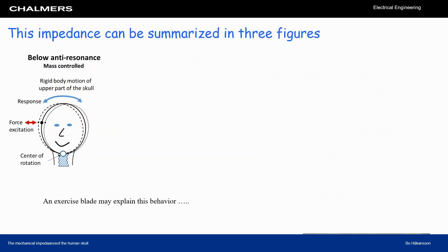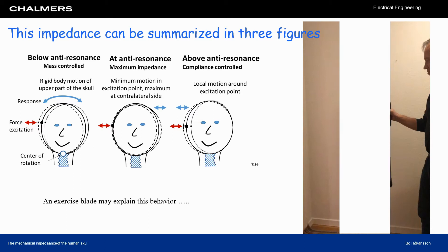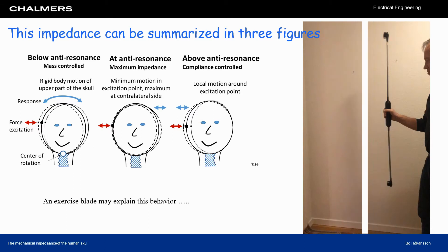This impedance can be summarized in three figures, perhaps using an exercise blade. First, below the anti-resonance, the skull moves as a rigid body. Secondly, at the anti-resonance, we have a maximum impedance magnitude and there is hardly any motion in the attachment point.